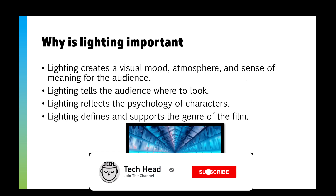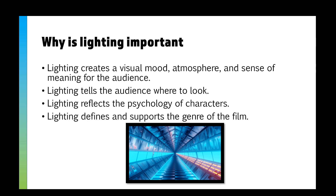Now, why is lighting important in the first place? Lighting creates a visual mood, an atmosphere, and a sense of meaning for the audience. It helps tell the audience where to look, what's important and what's not, and it reflects the psychology of the character. Think about films like Joker — quite a dark film with not a lot of lighting — or Batman Begins, where the slum areas of Gotham City are dark and dingy, showing it's not a nice place to be. It also supports the genre: a sci-fi film often has lots of bright digital-looking lights, whereas a romance film has soft, warm lighting that supports the feelings they want the audience to feel.